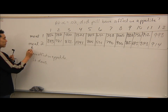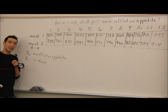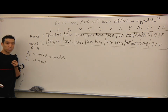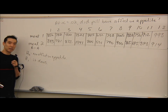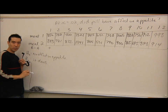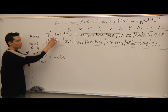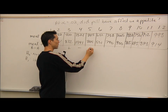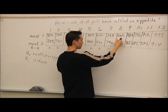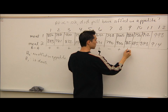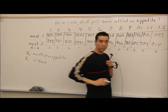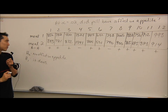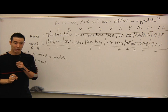Just like before, we look at the difference — before minus after — but here we only care about the sign of that difference. 856 minus 843 is positive. Going through all 12 people: positive, positive, negative, positive, positive, positive, positive, positive, positive, positive, positive. Just assign plus, minus, or zero for each person's before-minus-after difference.